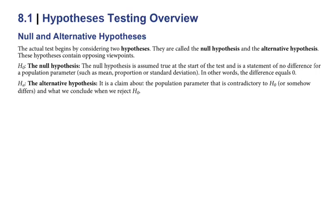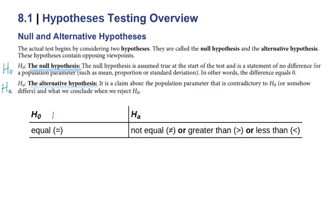And our alternative is going to be that it contradicts that in some way so that it somehow differs. Not necessarily the opposite, but that it somehow differs in that case. So our null hypothesis, we're going to denote by H0, and then our alternative, we're going to denote by HA. And so our null hypothesis is always going to take on the equal sign, and our alternative would take on not equal, greater, or less than.